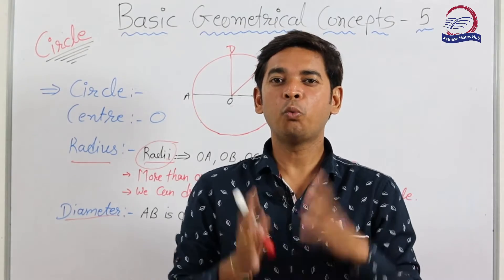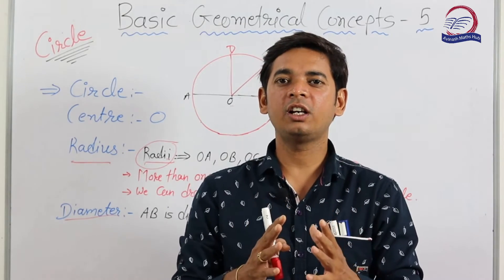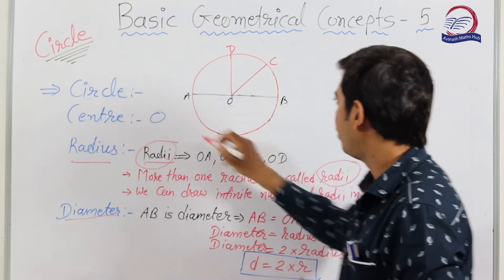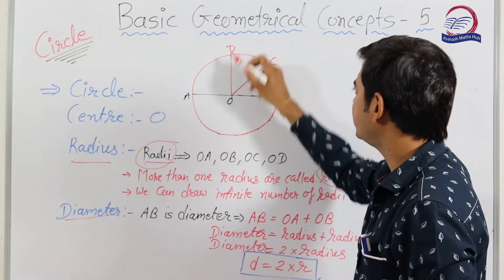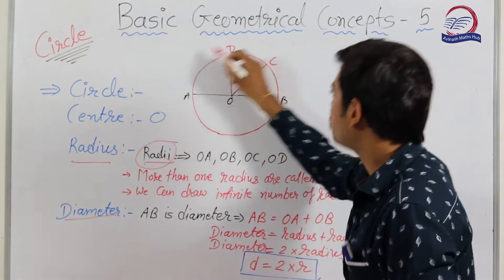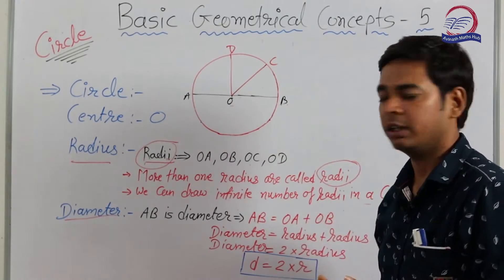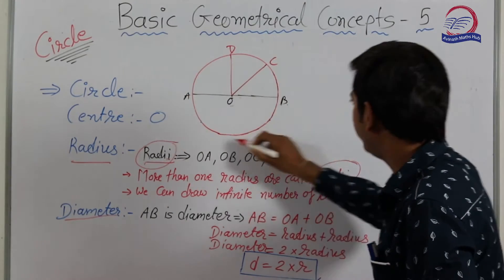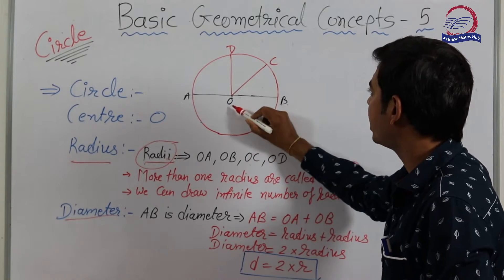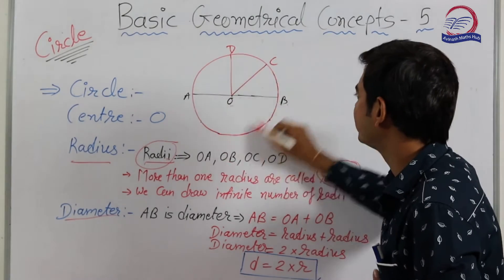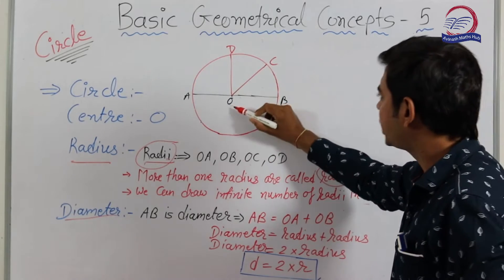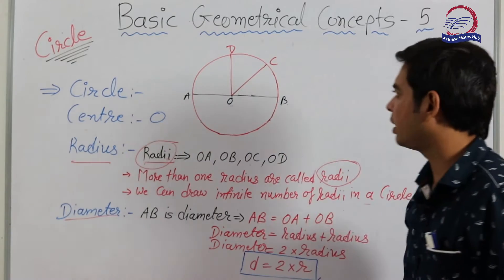What is a circle? A circle is all points which are equidistant from a given fixed point. If you join all points which are equidistant from the given fixed point, then a circle is formed. This fixed point is said to be the center of the circle.